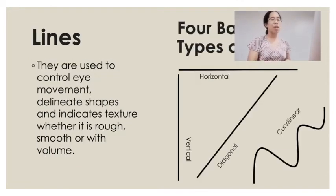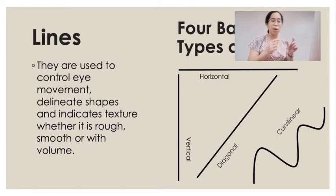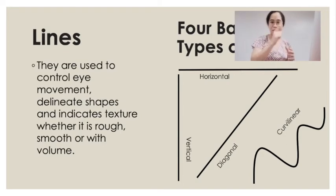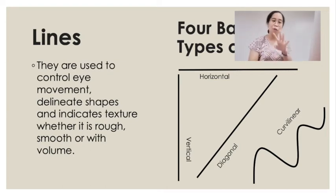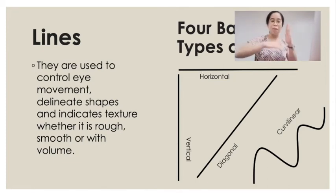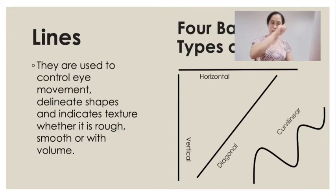Another element is lines. Lines are used to control the eye movement, delineate shapes, and indicate texture — whether it is rough, smooth, or with volume. There are four basic types of lines: horizontal, vertical, diagonal, and curve. If the curve has a repeating pattern, we call it curvilinear.